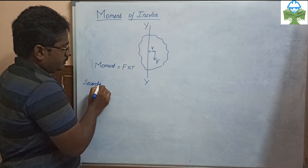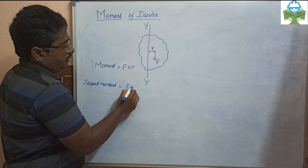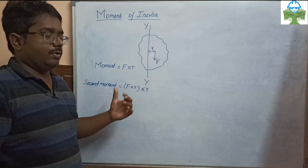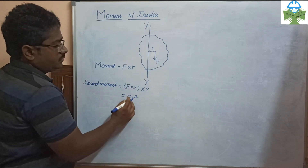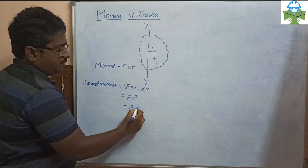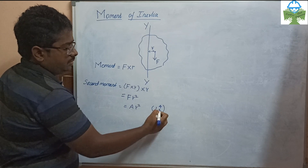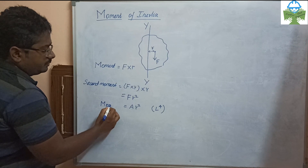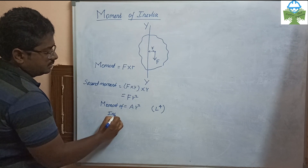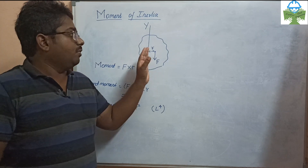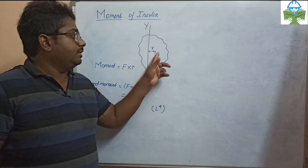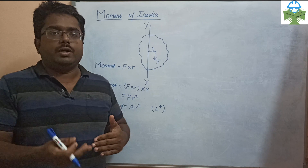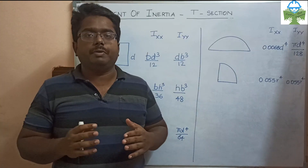If we consider the second moment of area, it is F into R, again into R. That is, the moment quantity is already written. This gives us the moment of inertia. If there is a moment of inertia, the object will rotate and the axis will rotate. The force-related term is the mass moment of inertia; the area-related term is the area moment of inertia.